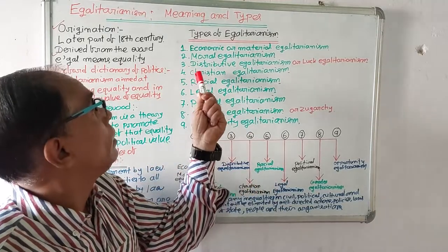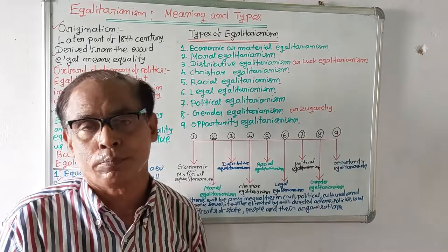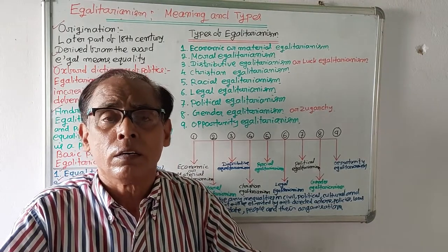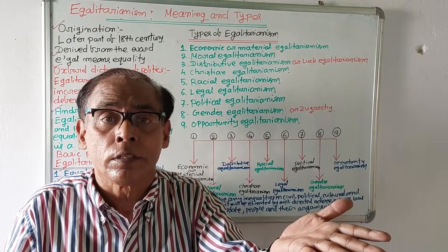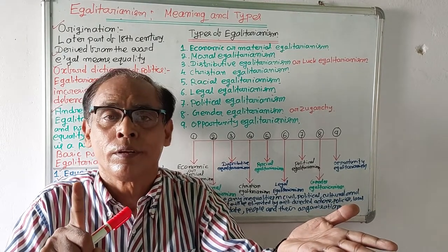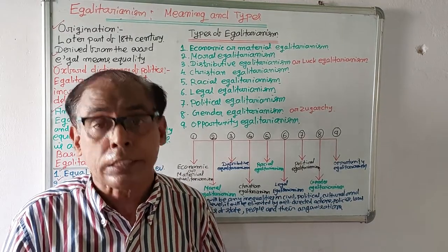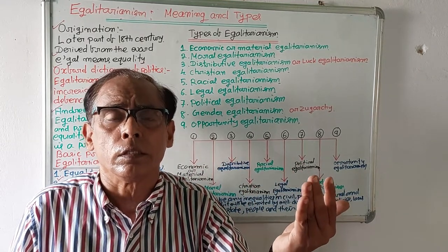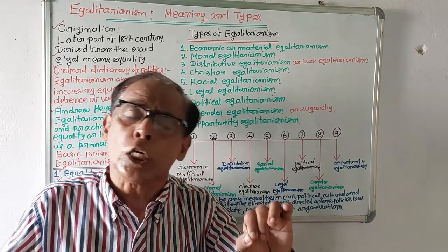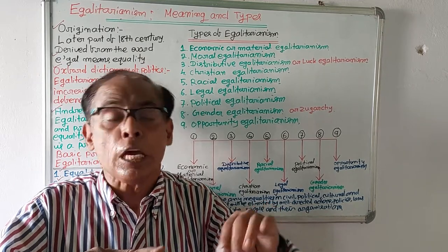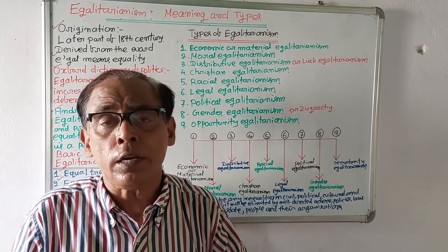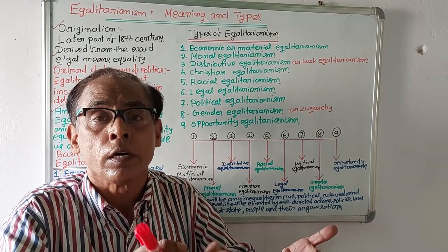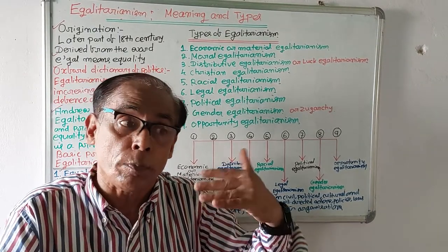Number three: distributive egalitarianism, also called legal egalitarianism. This means whenever people will be given justice, there must not be any discrimination or disparity. Any person who commits a mistake will be punished accordingly. If a rich person commits any mistake, he will not be given an excuse. So distributive egalitarianism means whenever justice is given, there will be no discrimination — everybody will be treated accordingly, whether rich or poor.